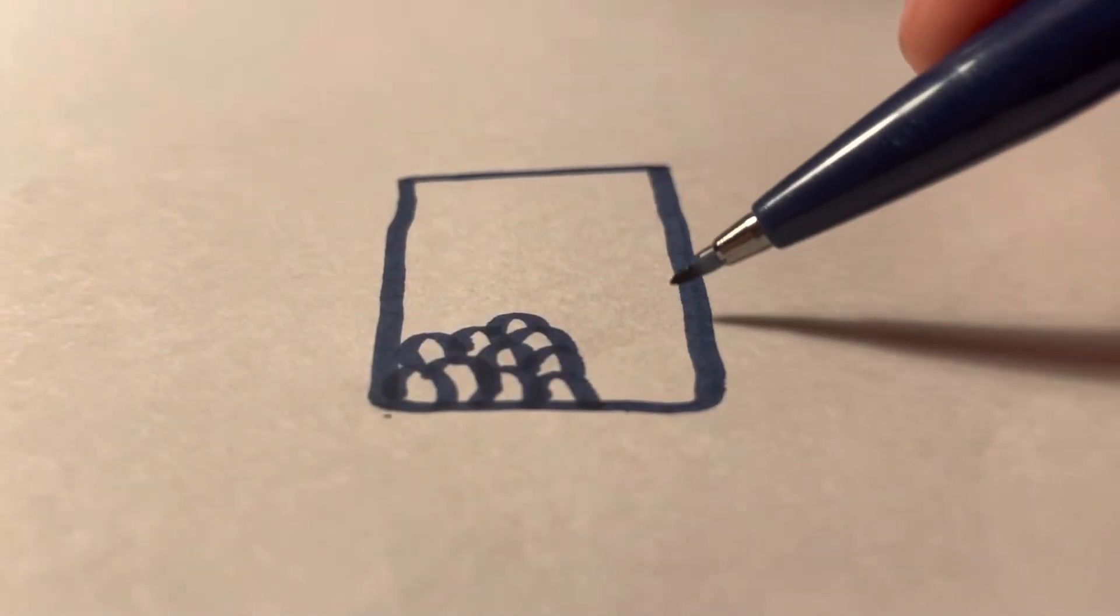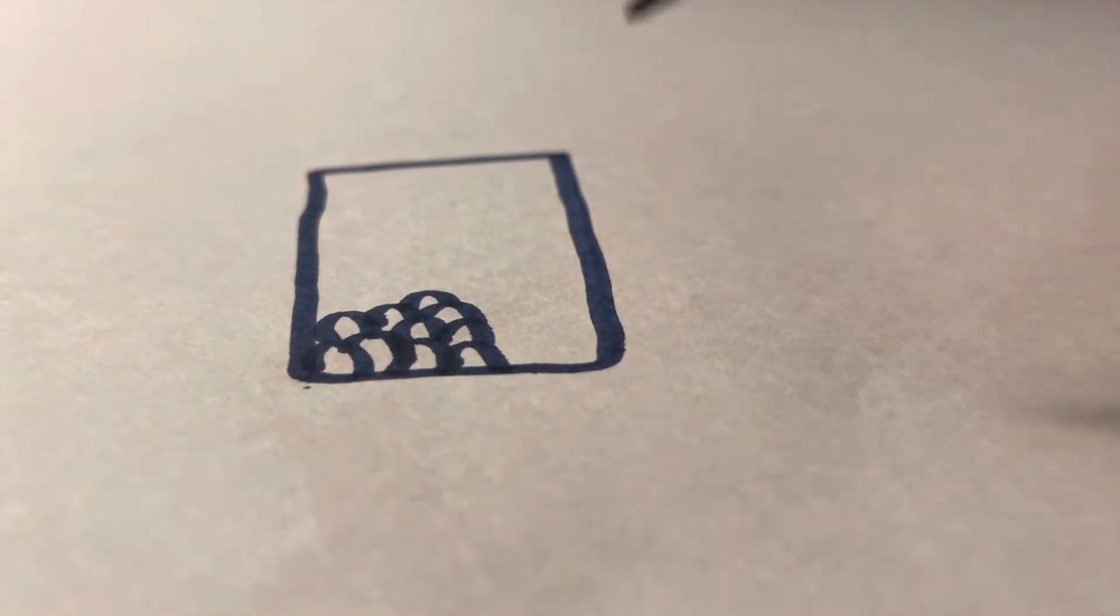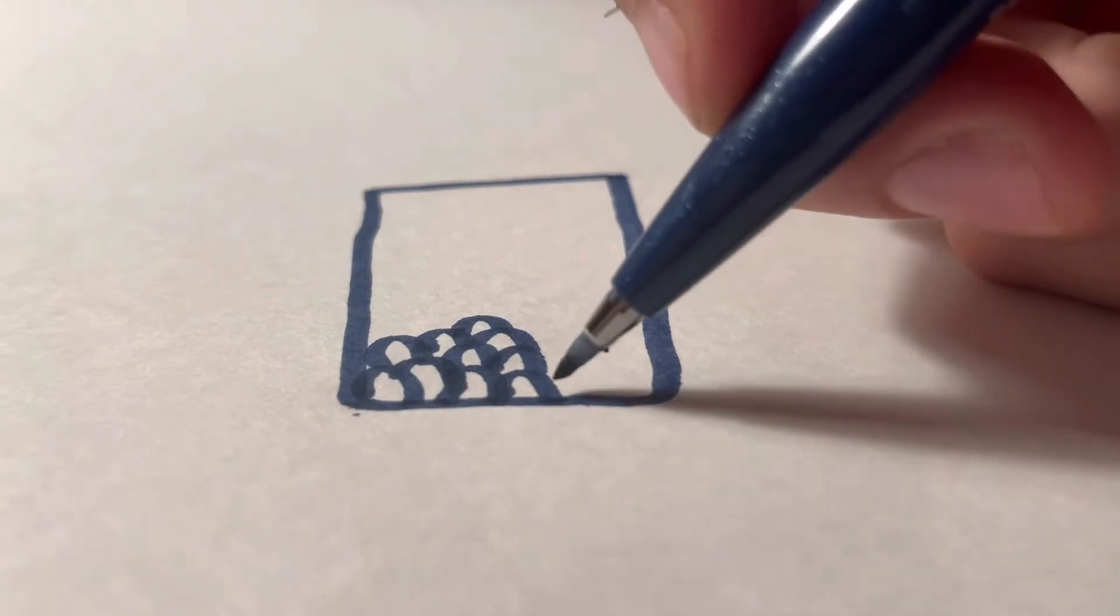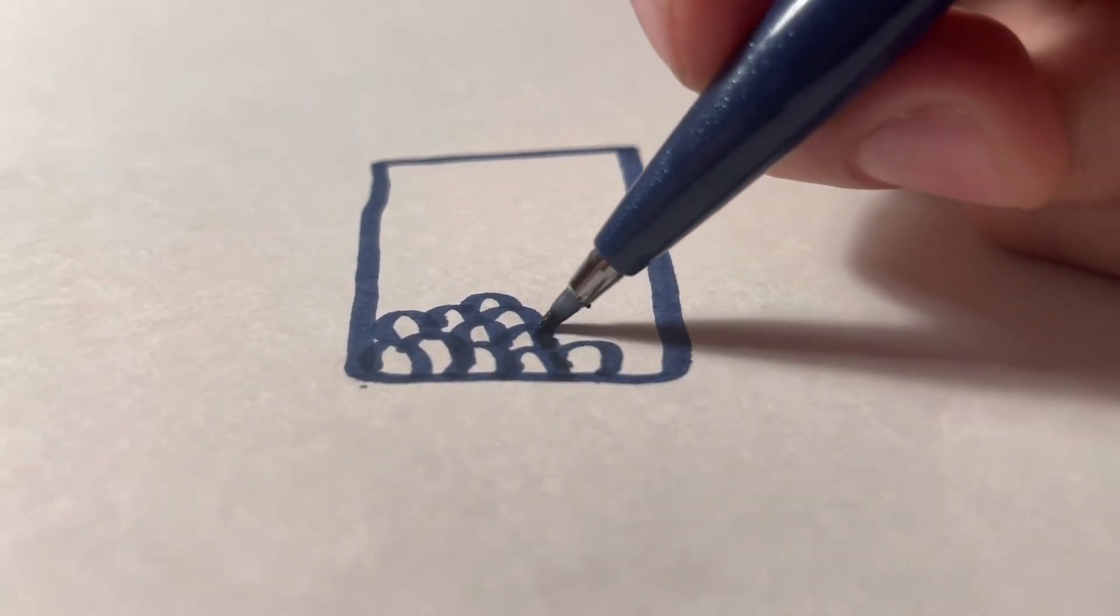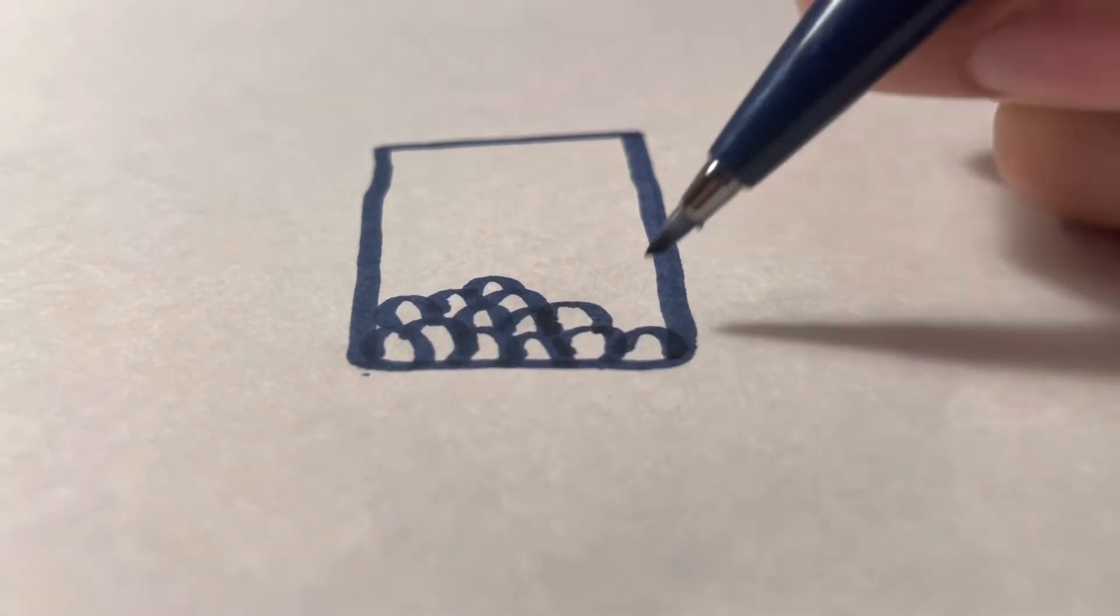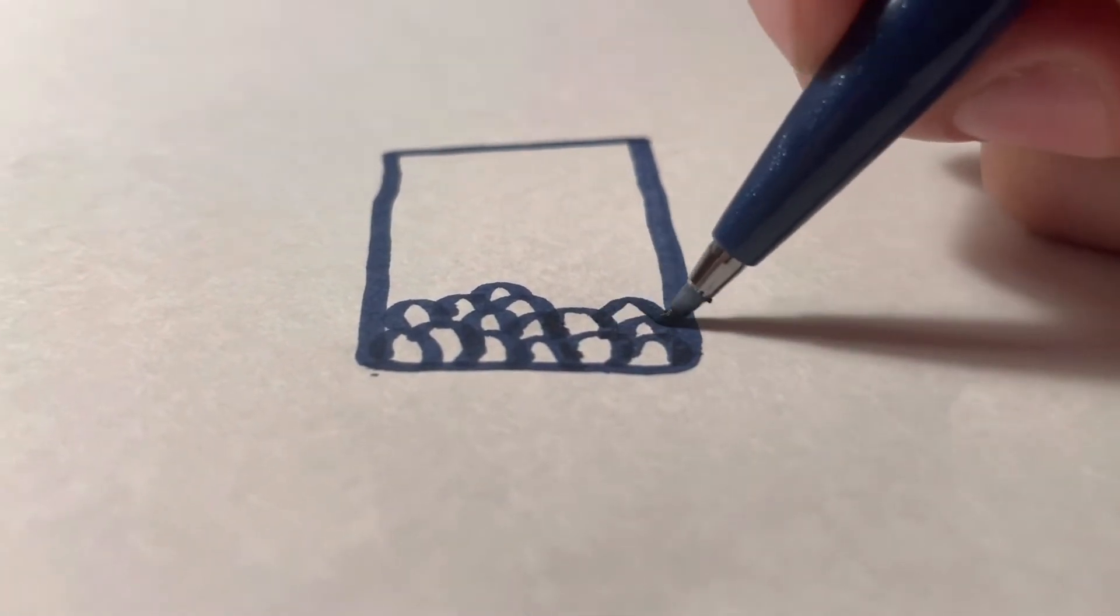By drawing a line just like this, then you want to draw the little bubbles. To draw the little bubbles, you just want to do little circles. If I'm going a bit too fast, you can always pause the video.